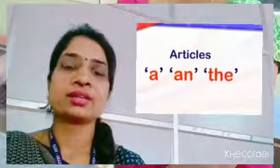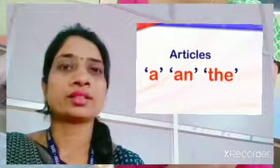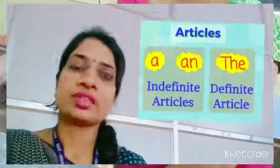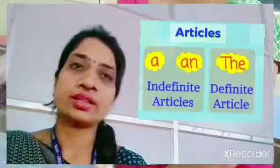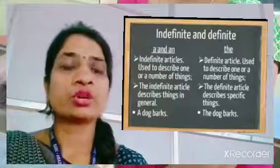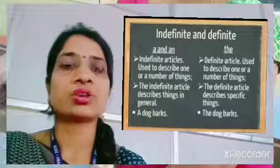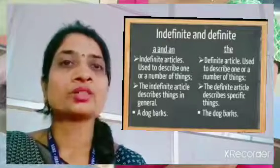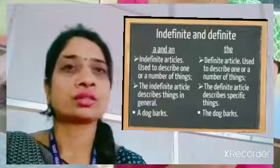In grammar there are three articles: 'a', 'an', and 'the'. 'A' and 'an' are termed as indefinite articles, and 'the' is the definite article. The indefinite articles talk about things in general, whereas the definite article talks about a specific thing.